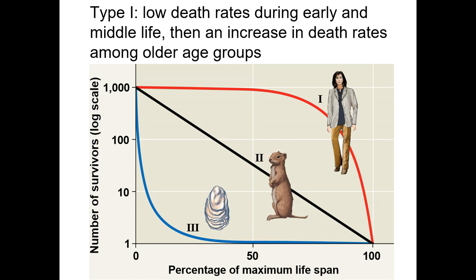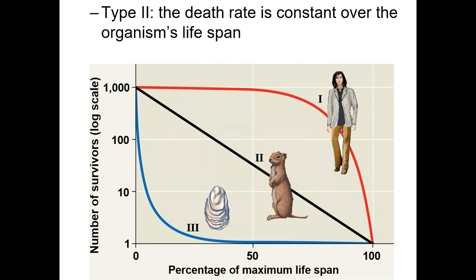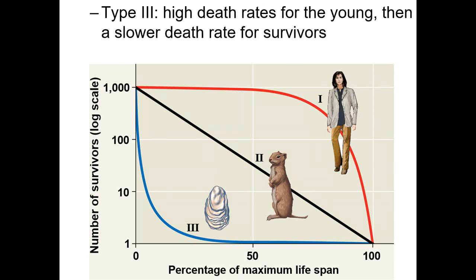Type II survivorship curve is intermediate between I and III — death rate is roughly constant across the organism's entire lifespan, so death is somewhat random with age. Type III applies to organisms like sponges or mosquitoes where a mother lays perhaps 200 eggs but most larvae don't survive. Very few babies make it to adulthood, so the strategy is quantity over quality — producing lots and lots of offspring and hoping one or two survive.